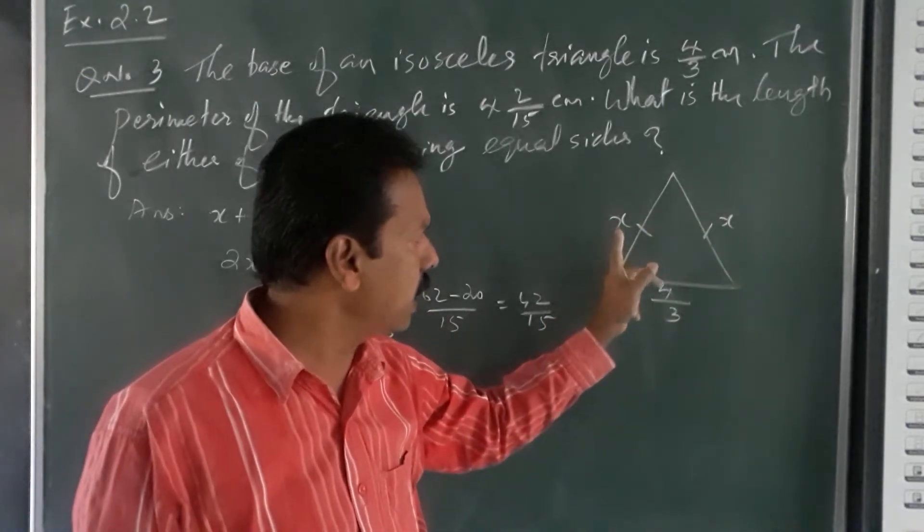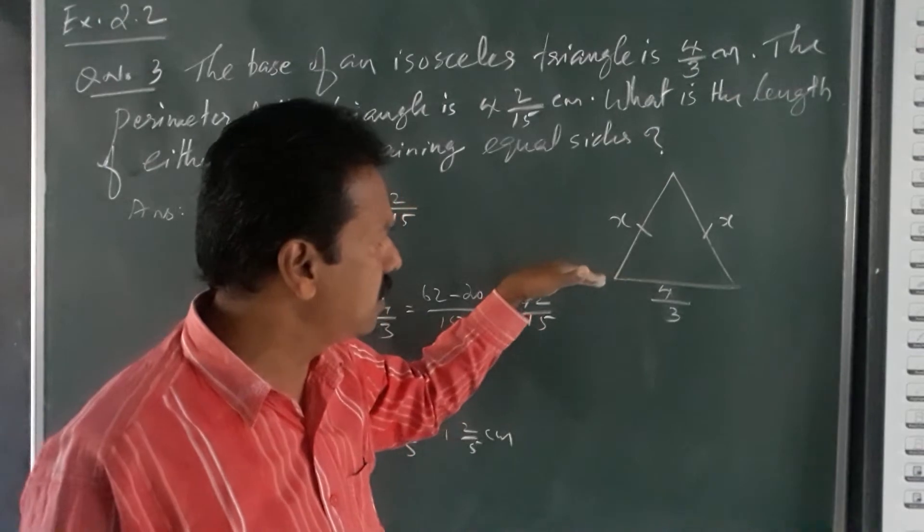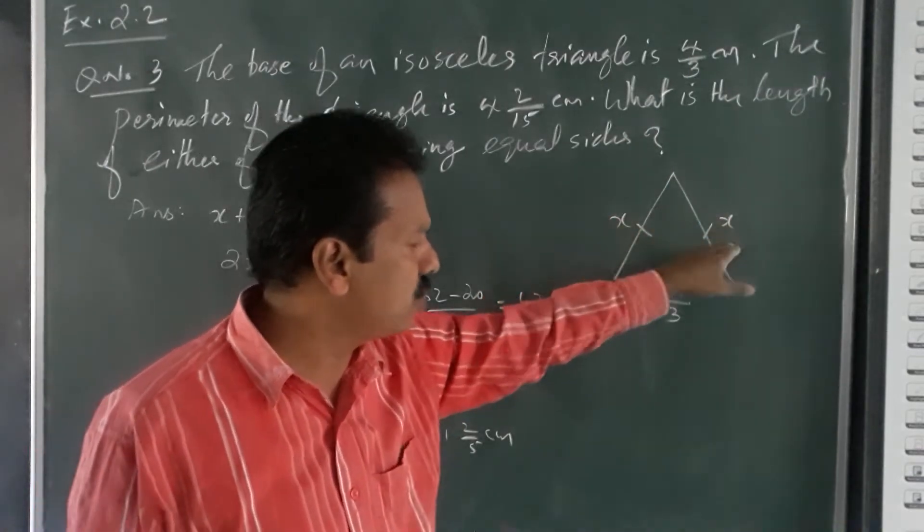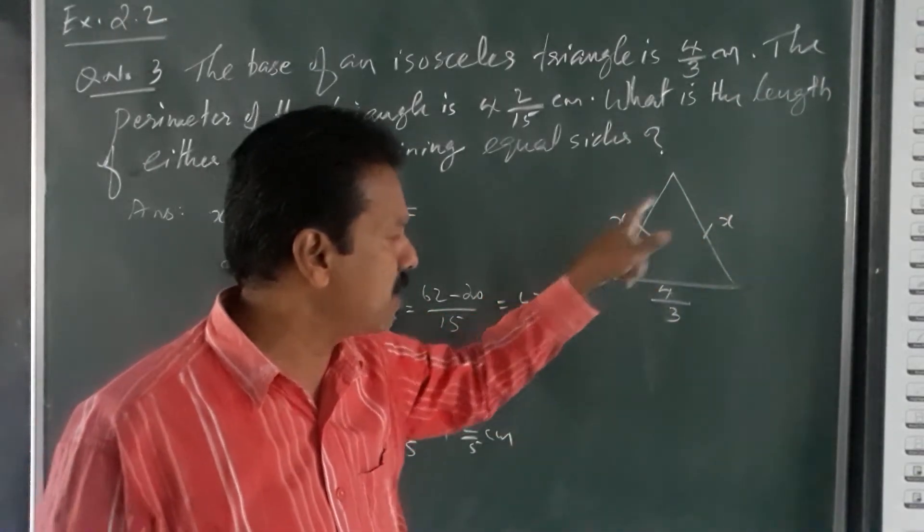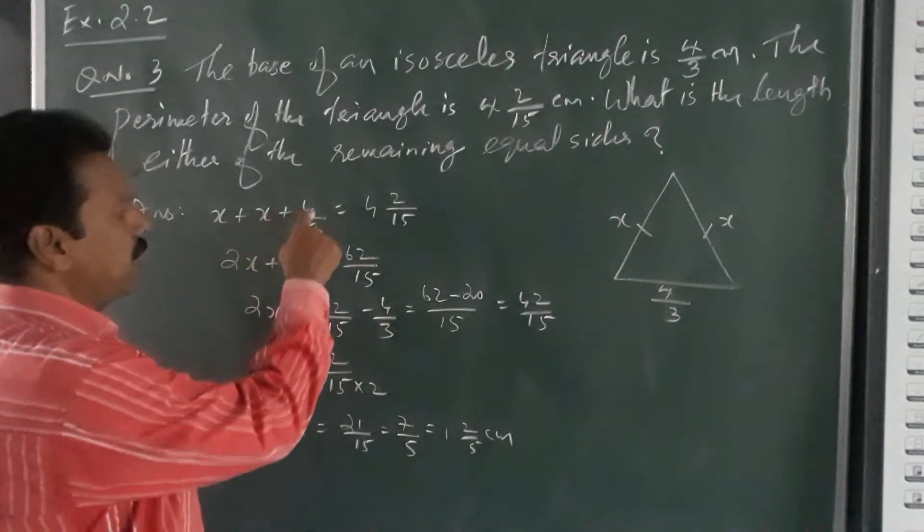Then let the equal sides be x and x. Perimeter means sum of all the three sides: this side plus this side plus this side. That is x plus x plus 4 by 3.